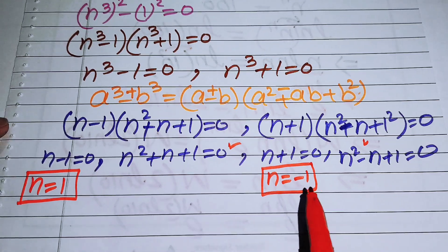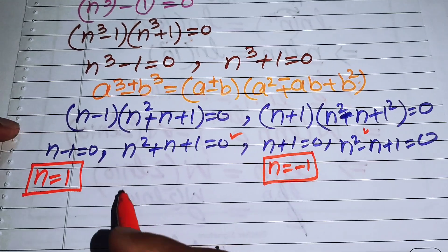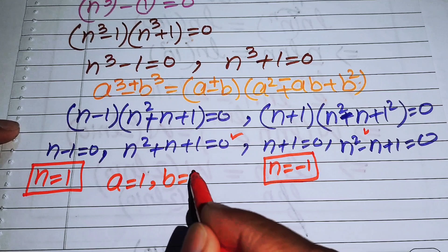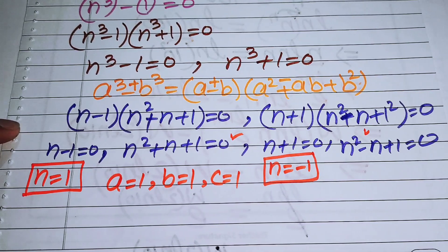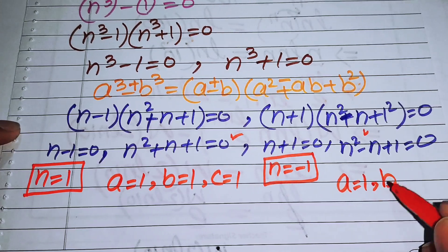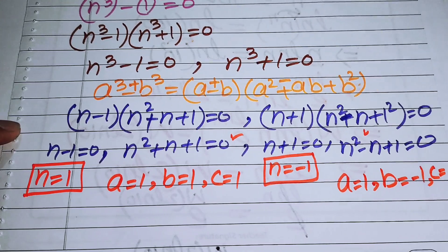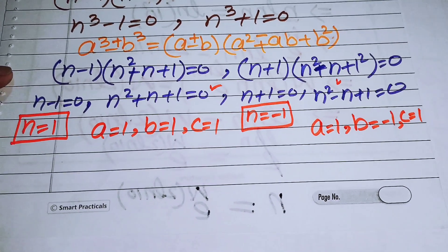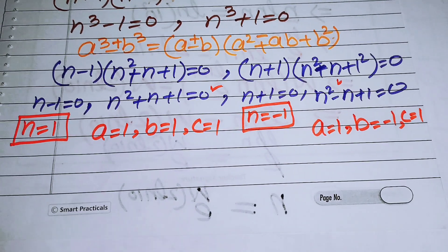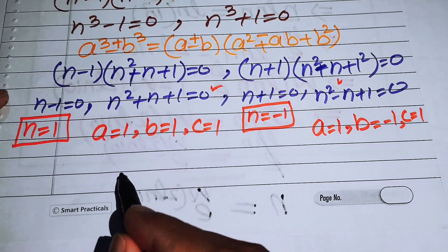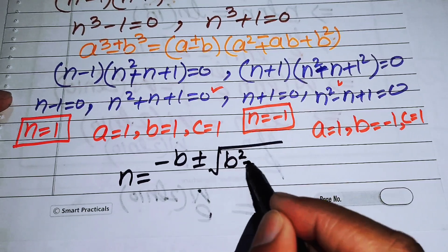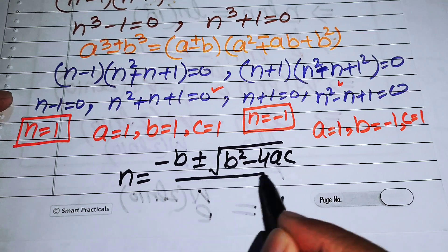We can use the quadratic formula to solve these two equations. For the equation n squared plus n plus 1 equals 0, the coefficients are a equals 1, b equals 1, c equals 1. For the equation n squared minus n plus 1 equals 0, the coefficients are a equals 1, b equals minus 1, c equals 1. The quadratic formula is n equals minus b plus or minus square root of b squared minus 4ac, over 2a.